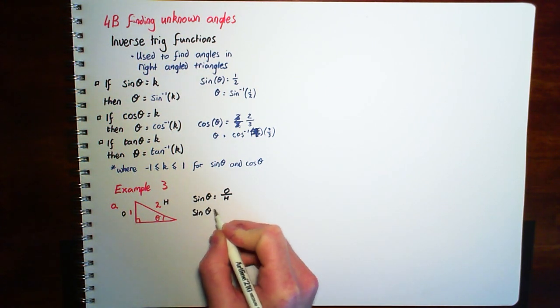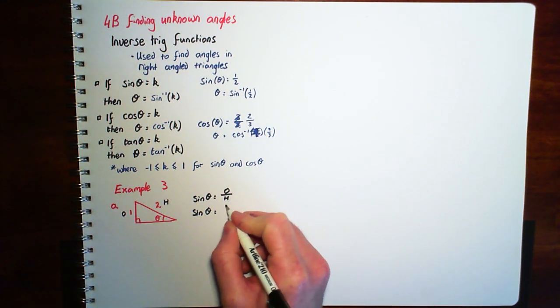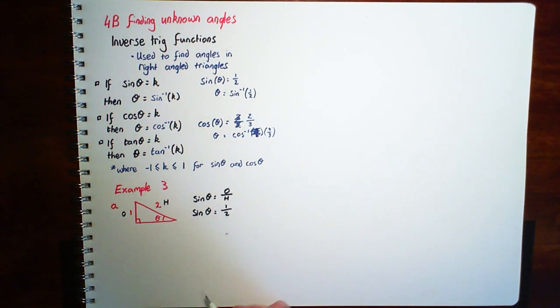And then we say, well, we don't know what sine of theta is but O is 1 and H is 2. Now we've got sine of theta equals a half. So theta is going to be the inverse sine of a half. And if we put that in our calculators, making sure that our calculators are in degrees, we've got 30 degrees.